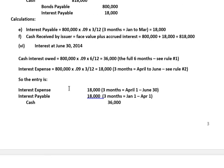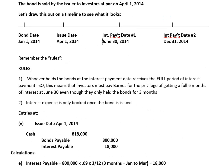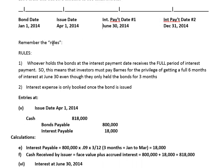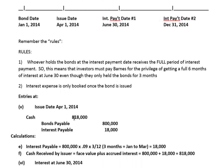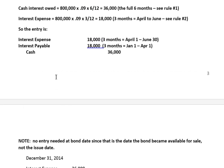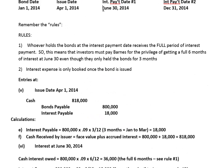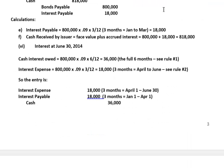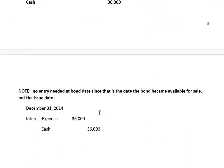The reason it's different from June 30th is because the interest payment on June 30th was the first six months of interest — that had to include a return of the upfront payment that Barnes got from its investors, which was part of that $818,000. On December 31st, we're just looking at the period from June 30th to December 31st — the next six-month period. We don't have to worry about that upfront payment, so it's just a straight interest expense debit and credit to cash.